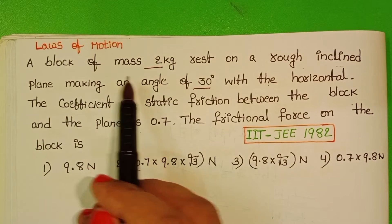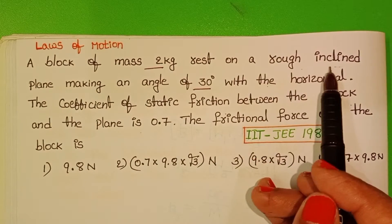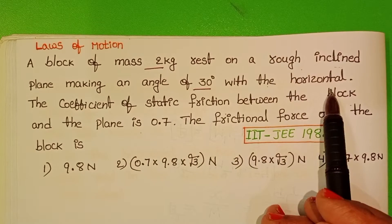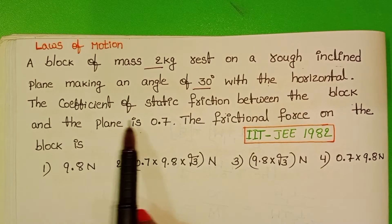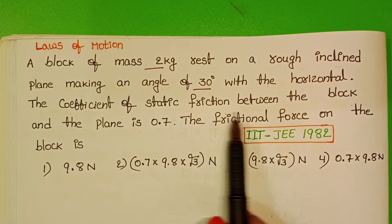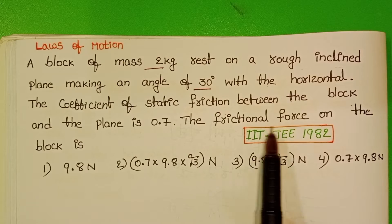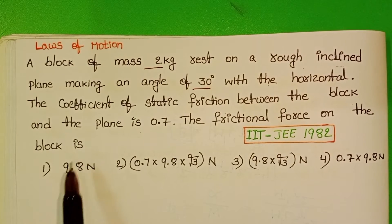A block of mass 2 kg rests on a rough inclined plane, making an angle of 30 degrees with the horizontal. The coefficient of static friction between the block and the plane is 0.7. The frictional force on the block is.